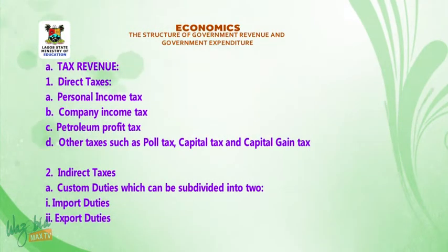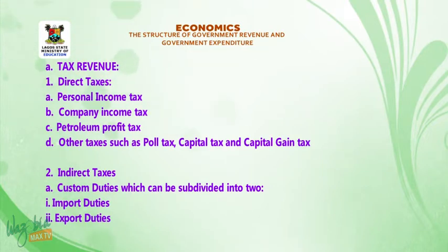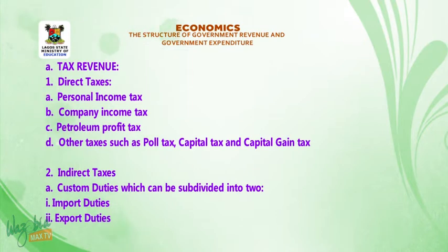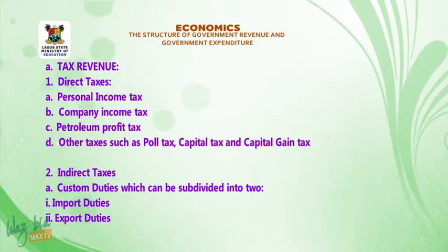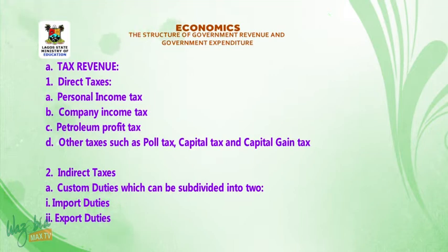Under tax revenue, we have: A. Direct taxes. Items under direct taxes are: 1. Personal income tax, 2. Company income tax, 3. Petroleum profit tax, 4. Other taxes such as poll tax, capital tax, and capital gains tax.